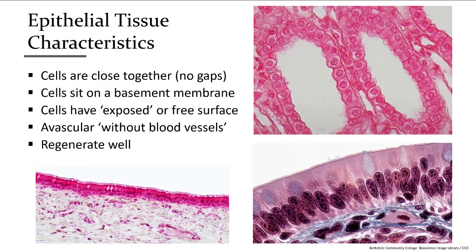Characteristics of epithelial tissue are that they are close together — there are no gaps between them. They sit on a basement membrane, side by side, on a surface, and they have one surface that's exposed or free, facing the outside world, or facing air in the lungs, or facing the middle of the stomach where food would be. It's also avascular, meaning it doesn't have blood vessels — blood vessels come only to the basement membrane where it gets its nutrients. Epithelial tissue also regenerates well because it's always being damaged on the surface of the skin, exposed to harsh environments. You're constantly growing new epithelial tissue, which is also why cancers of epithelial tissue can grow rapidly.